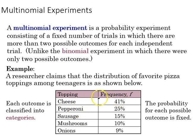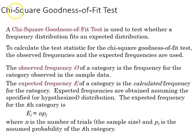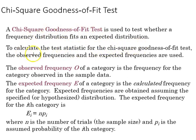We also recall our discussion of frequency tables and classes, and this is what we've got here. What we're doing with the chi-square goodness of fit test is examining whether or not a frequency distribution fits an expected distribution, and we calculate a test statistic for that, comparing the observed to the expected frequencies.